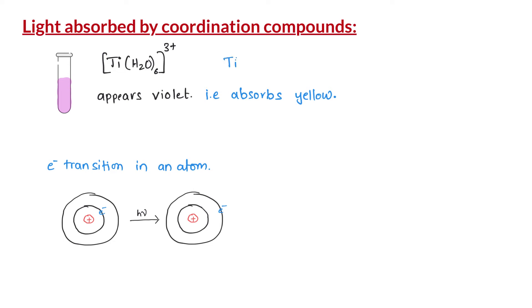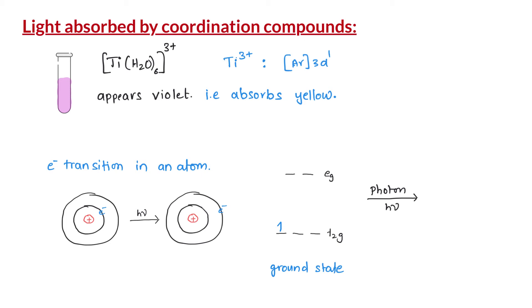The titanium 3+ ion in the complex has an electronic configuration of [Ar] 3d¹. Based on crystal field theory, in the presence of ligands, the d orbitals of the central metal ion split into T2g and Eg orbitals. The lone d electron in titanium 3+ is in the T2g orbitals in its ground state. When this complex ion absorbs a photon, the electron gets excited from a T2g orbital to an Eg orbital. This is called a d-d electron transition, and the transition happens because of the absorbed yellow photon.